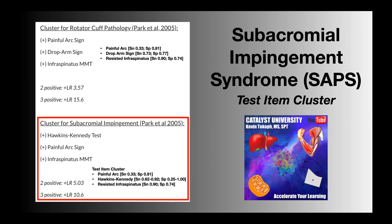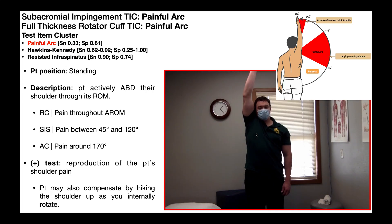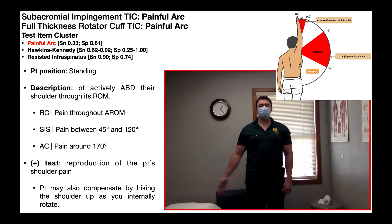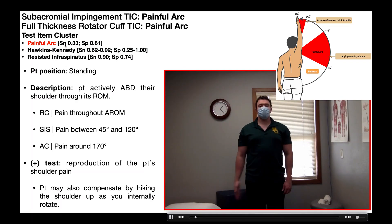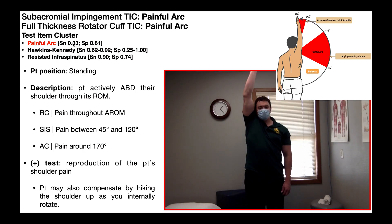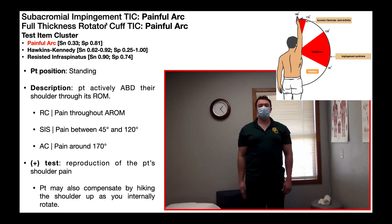Now that we understand this test item cluster, let's go into each individual test. The painful arc test is a component of two test item clusters — one for subacromial impingement syndrome and the other for a full thickness rotator cuff tear. The test is very simple: the patient stands and actively abducts their shoulder through its entire range of motion. If we look at the psychometrics, the sensitivity is very low at 0.33, so it's bad at ruling out a condition when this test is negative. But the specificity is moderately good at 0.81, meaning that if a patient has a positive painful arc test, there's an 81% chance they have one of these two conditions.